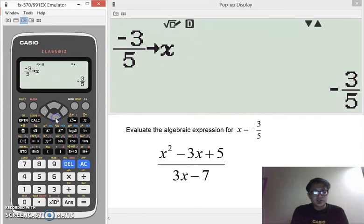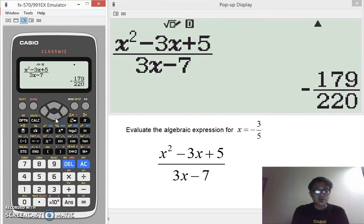And using the substitution or the STO button, we got negative 179 over 220. So, there. That's why this is one of my favorite features of the ClassWiz.